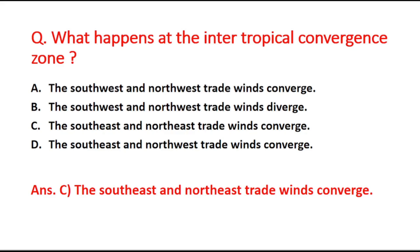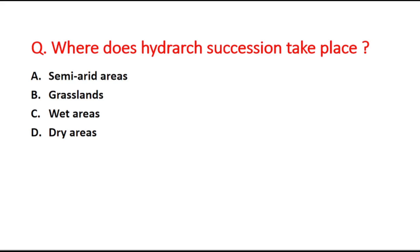Next question: Where does hydrarch succession take place? Option A is semi-arid areas, B is grasslands, C is wet areas, and D is dry areas. The right answer is option C, wet areas.